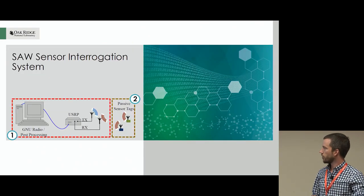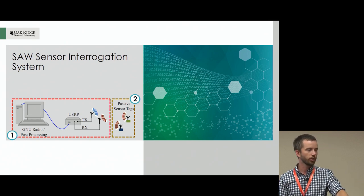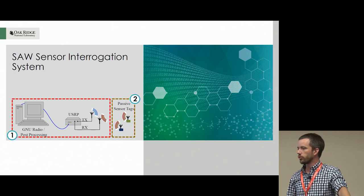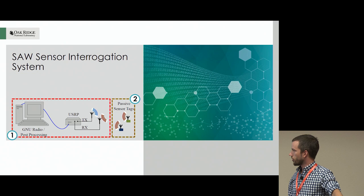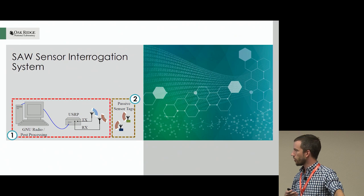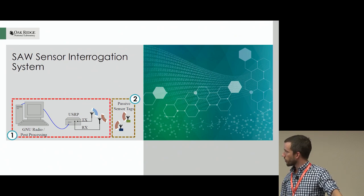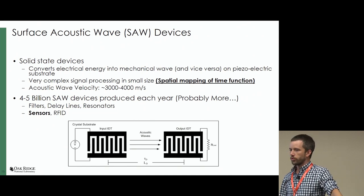I'm going to switch gears here to the SAW sensor interrogation system. This is another group of projects I've been working on at the lab. There's been a lot of interest in wireless sensing for power grid applications as well as national security applications. The system consists of a transceiver and wireless sensors — we're sending out a high-frequency burst, listening for the echo off the sensors, and processing them to extract data.